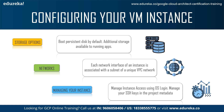Next we have networks. Each network interface of an instance is associated with a subnet or a VPC unique network. When you create an instance, if you have a certain subnet for it, your virtual private cloud will connect to that subnet. You can also add labels during your VM creation process to help identify the VM instance resources.